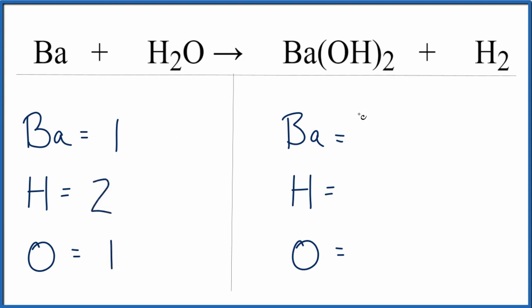Over here, we have the one barium. And this two is going to go to everything in the parentheses. So for the hydrogens, two times the one, that gives us two hydrogens. Two times the one oxygen, that gives us two oxygen atoms. And I forgot that we have these two out here.